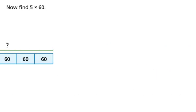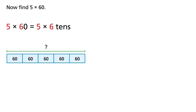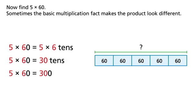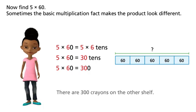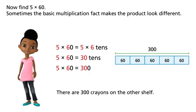Now find 5 times 60. 5 times 60 equals 5 times 6 tens. What is the product of 5 times 60? Sometimes the basic multiplication fact makes the product look different. 5 times 60 equals 30 tens, or 300. There are 300 crayons on the other shelf.